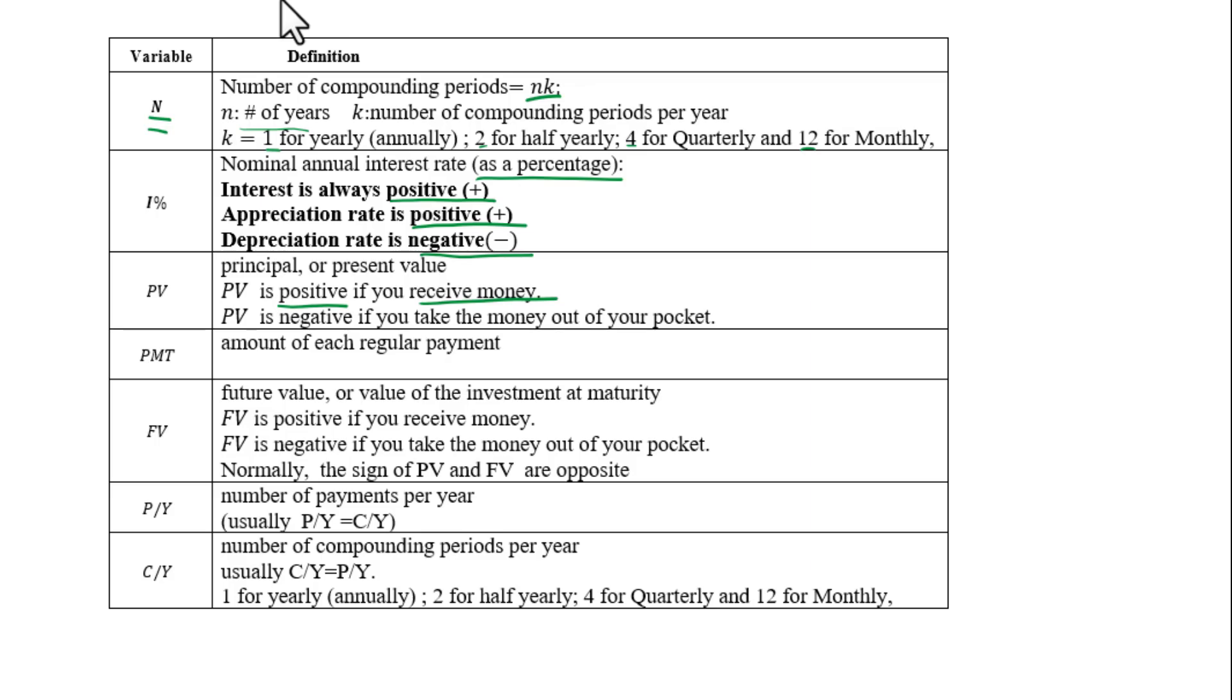PMT means amount for each regular payment. FV means future value. FV is positive if you receive money. FV is negative if you take the money out of your pocket.